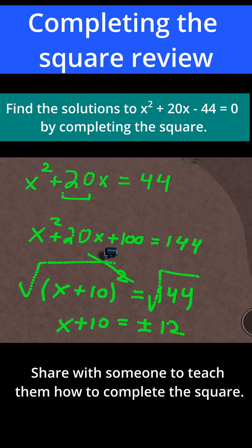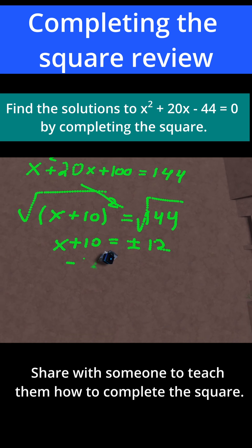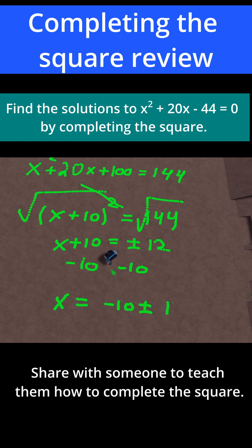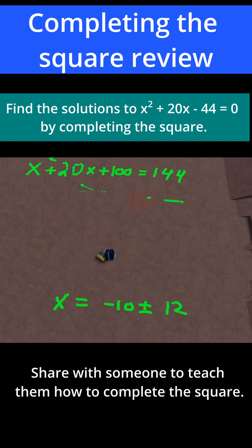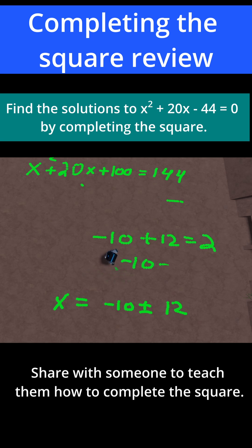And now we can subtract 10 from both sides, so we have x is equal to minus 10 plus or minus 12. We can find both solutions pretty easily now. Minus 10 plus 12 is equal to positive 2, and minus 10 minus 12 — wait, that's negative 22, not negative 12.